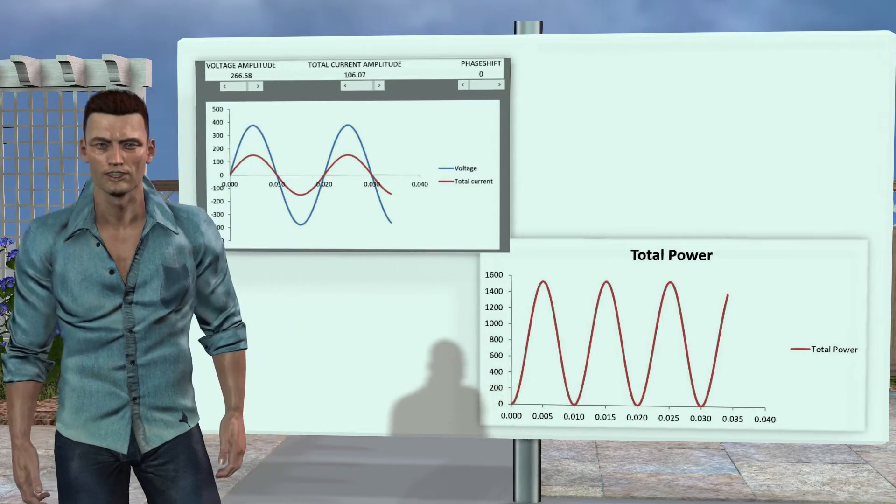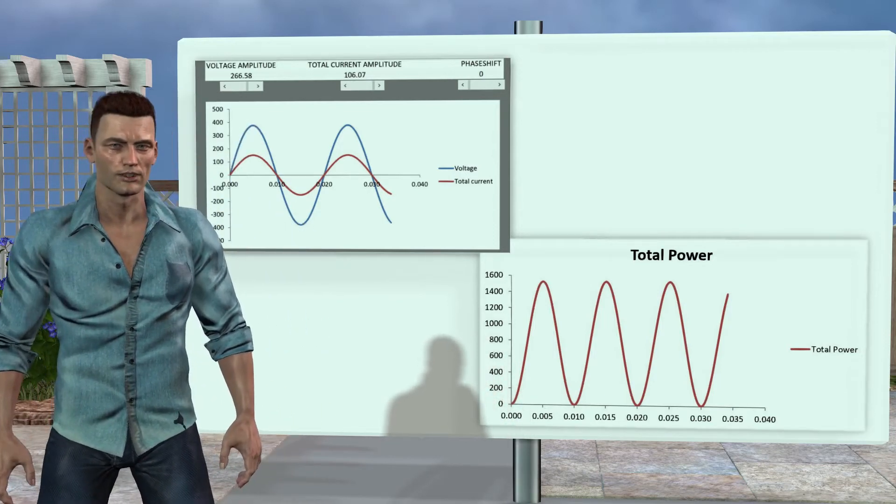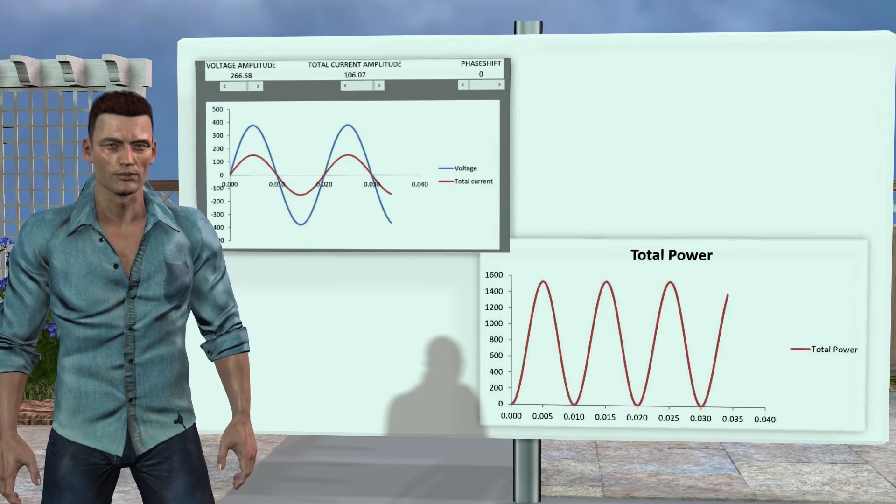Let's start first with a resistive load, that is, a load in which the phase shift between voltage and current is zero degrees.